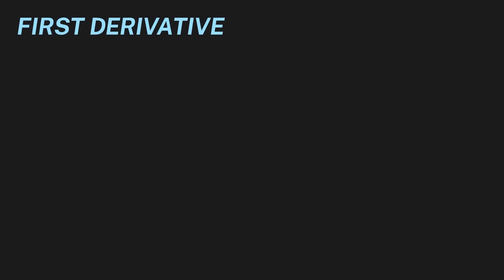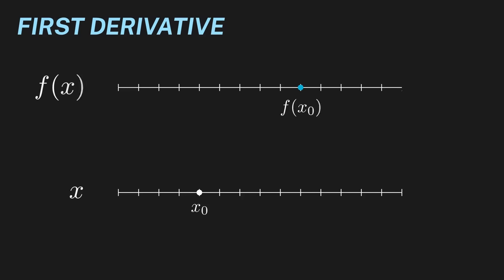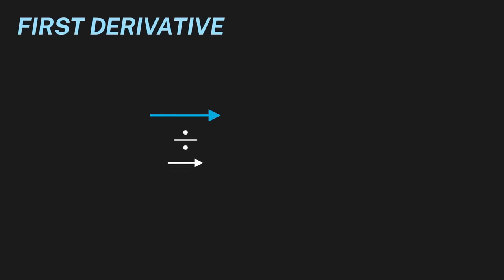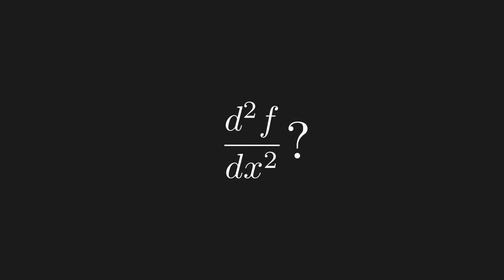To begin our journey on the second derivative, let's quickly review our intuition of the first derivative. Say we have some variable x and a point x₀, and some function f(x). If we move x a tiny bit away from x₀, we will correspondingly move f(x) a tiny bit away from f(x₀). If we then take the change in f(x) and divide by the change in x, we intuitively get the first derivative at the point x₀. So the first derivative intuitively tells us how much f changes when we change x by a tiny amount.